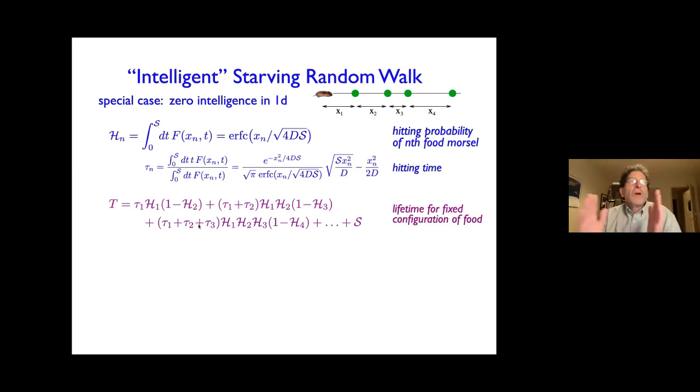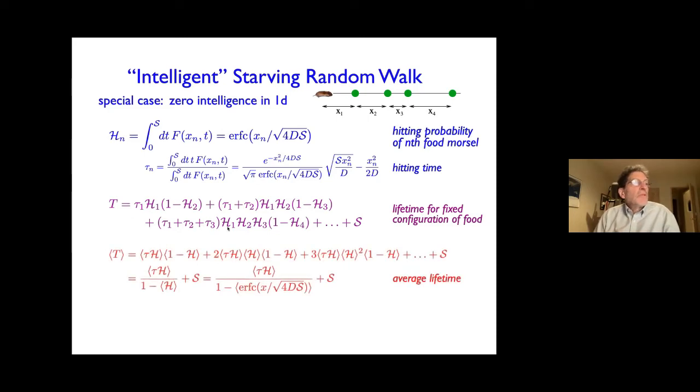And one can write a series representation for the mean time for a given configuration, because you either eat one morsel of food, two morsels of food with two hitting probabilities, and you don't get to the third guy with three hitting probabilities and three hitting times, and so on. And then there's the last piece s, which is how long you can live without food before starving. And so this is the time for a given configuration of food. One then has to average over all configurations of the food, so over all distances. And when you do that, things with different indices, the averages commute; for same indices, they don't commute. It's kind of straightforward and just simple bookkeeping. And so you get the average time for an unintelligent forager.